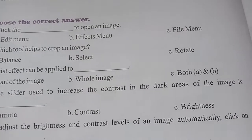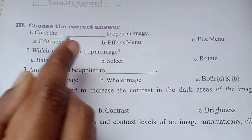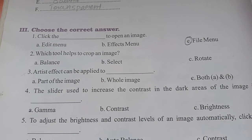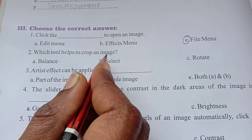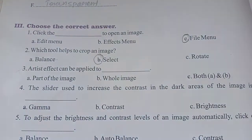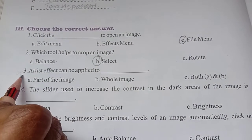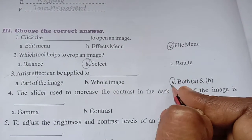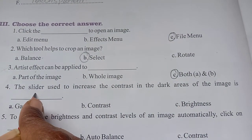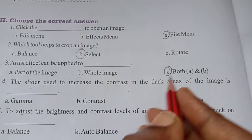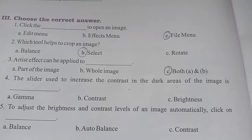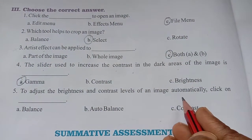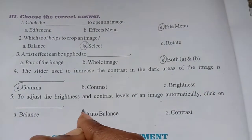Now we are moving to choose the correct answer. First: 'Click dash to open an image' — answer is File menu. Second: 'Which tool helps to crop an image?' — the Select tool helps us to crop an image. Third: 'Artist effect can be applied to dash' — answer is Both A and B. Fourth: 'The slider used to increase contrast in dark areas of the image' — dark areas means that is Gamma.